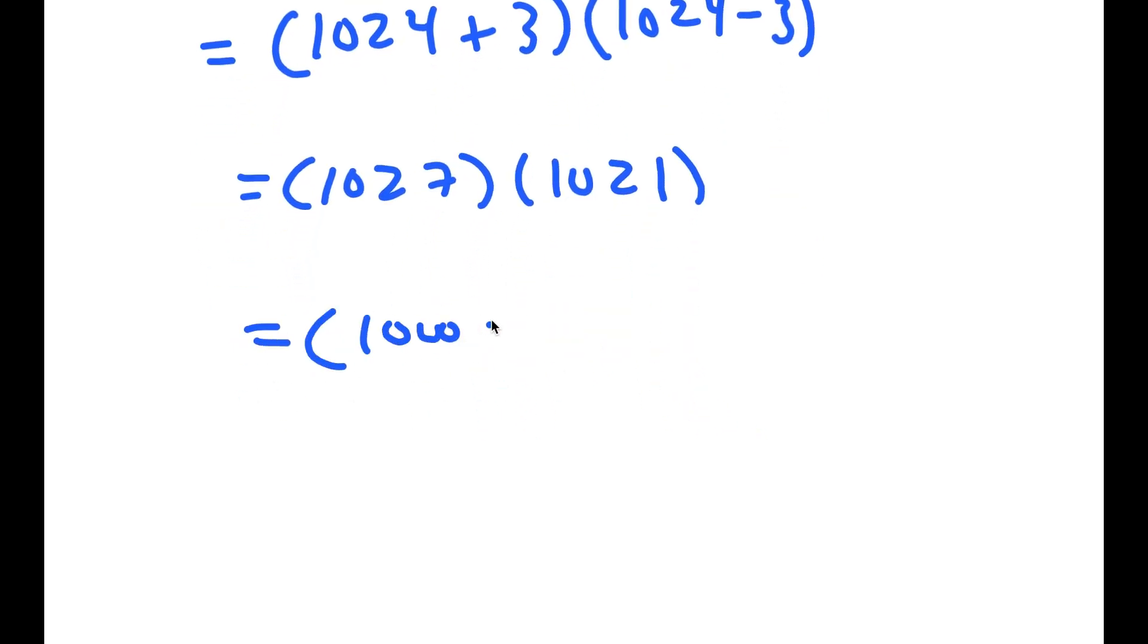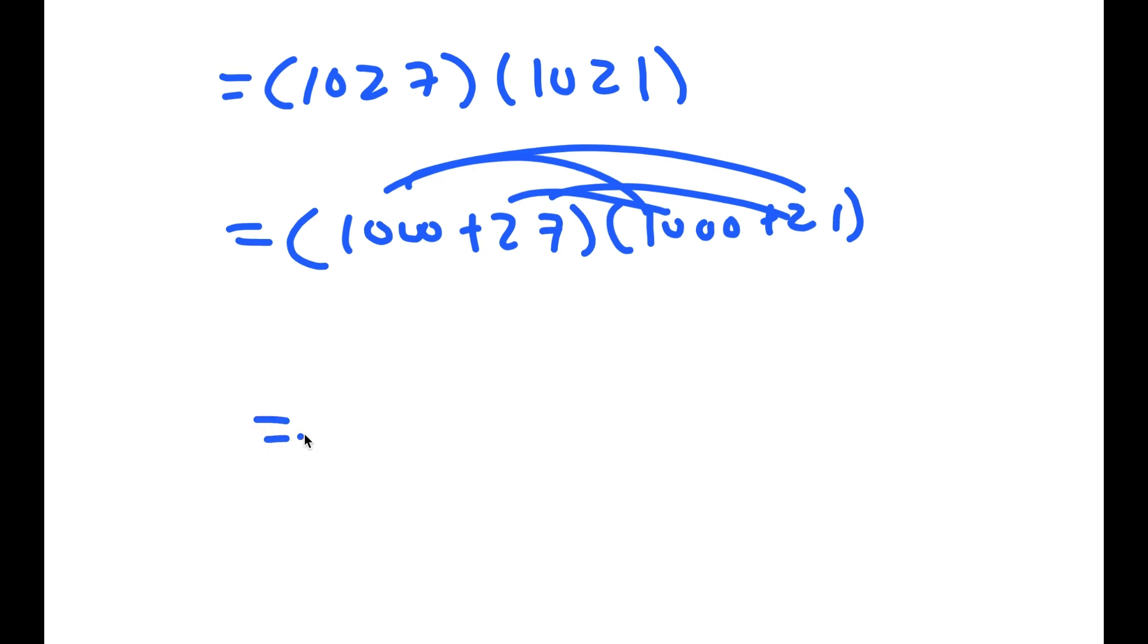Now, to easily solve this, I'm going to rewrite this as 1000 plus 27 times 1000 plus 21, and I'm going to distribute.